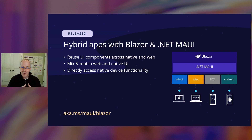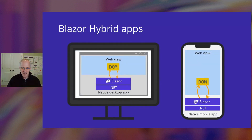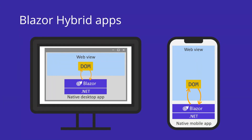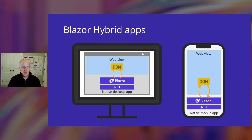By using .NET MAUI and Blazor together, you can reuse one set of web UI components across mobile, desktop, and the web. .NET MAUI will execute your Blazor components directly in the app and render them to an embedded WebView control through a local interop channel. Your Blazor components run natively on the device — WebAssembly isn't involved. This means your Blazor components run fast and have full access to the native capabilities of the device through the .NET platform. We call this hosting model Blazor Hybrid.